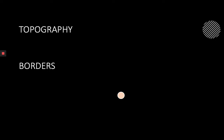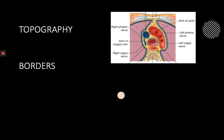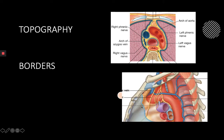So where is the thymus? It's in the mediastinum, which is the central area in the thorax between the lungs. More specifically, it is in the superior mediastinum and it's the most anterior structure in there. It lies below the manubrium, which is part of the sternum, and it sits on the pericardium, separated from the great vessels by layers of fascia.